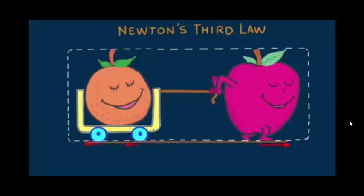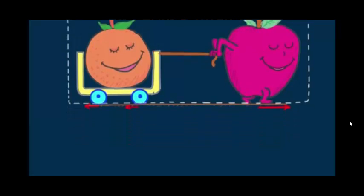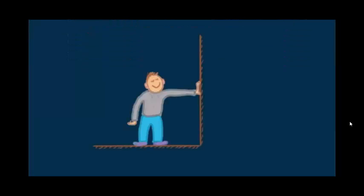So we see that forces always come in pairs. The force exerted on one object always comes from interaction with another object. You push on a wall, and the wall pushes on you. In fact, you can't push on a wall unless the wall pushes back on you. One force can't exist without the other.